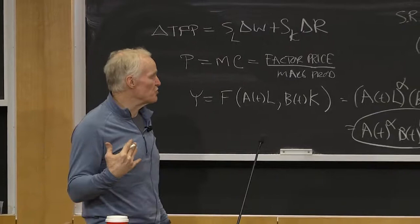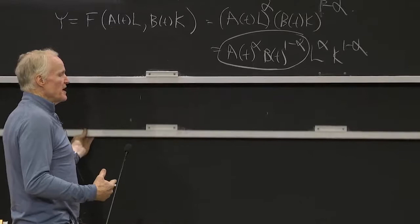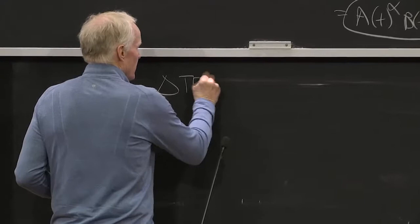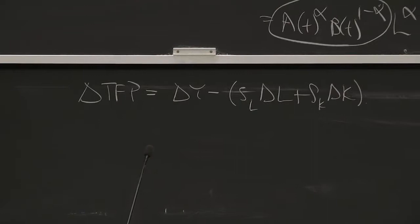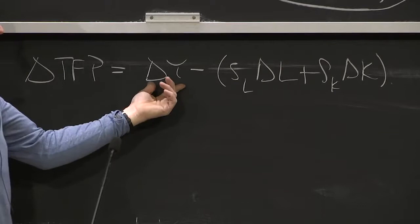One thing is a little different between measuring technological bias and measuring technological progress. Remember, we can measure technical progress as delta TfV equals delta Y minus SL delta L plus SAO. That was a measure of technological progress. The most common measure was on the quantity side as the growth in output minus the growth in inputs.